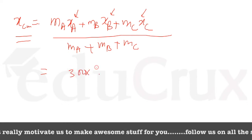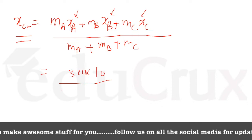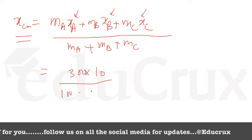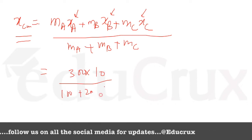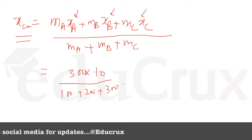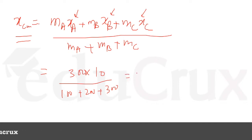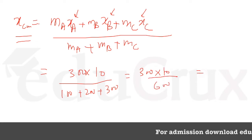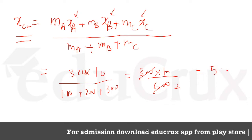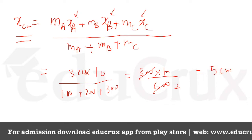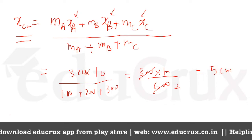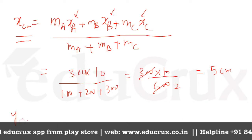For the third term we have 300 grams × 10, divided by (100 + 200 + 300) = 600. So X_cm = 3000 / 600 = 5 centimeters.